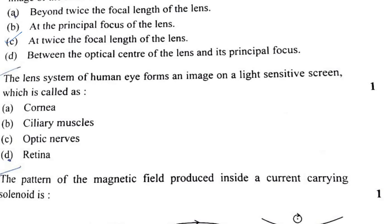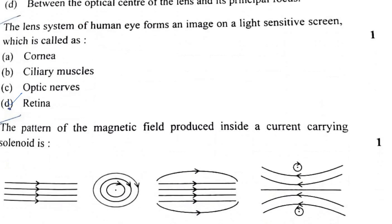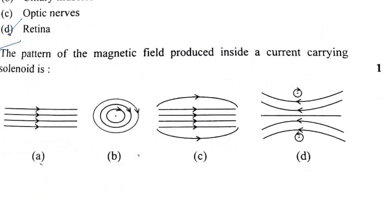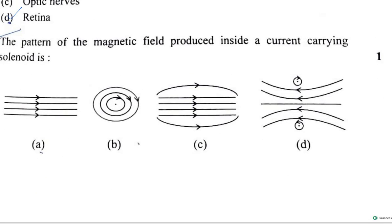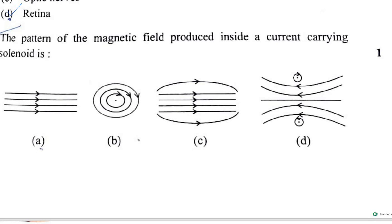Question 13: The lens system of the human eye forms an image on a light-sensitive screen called the retina. So the answer is option D.